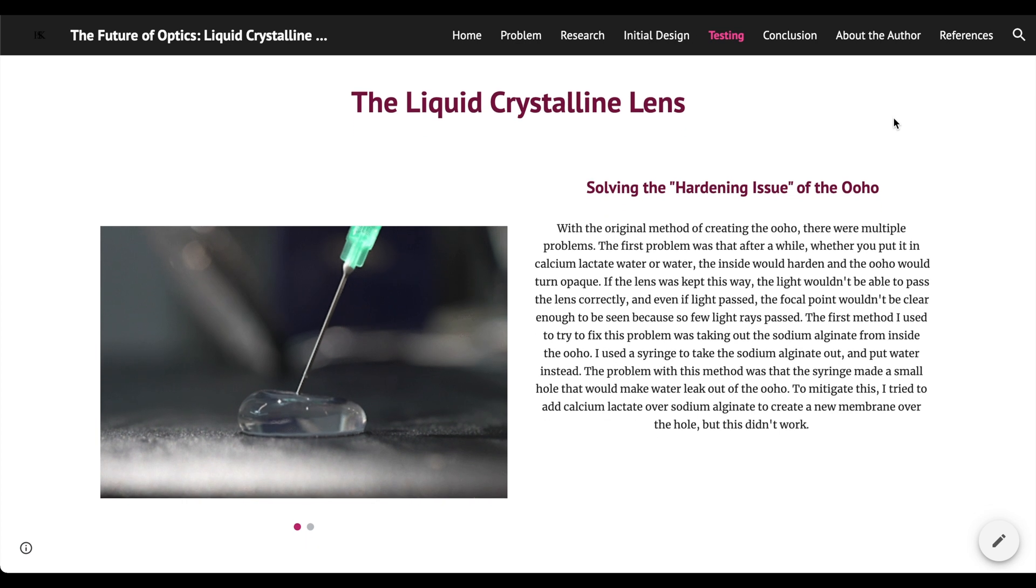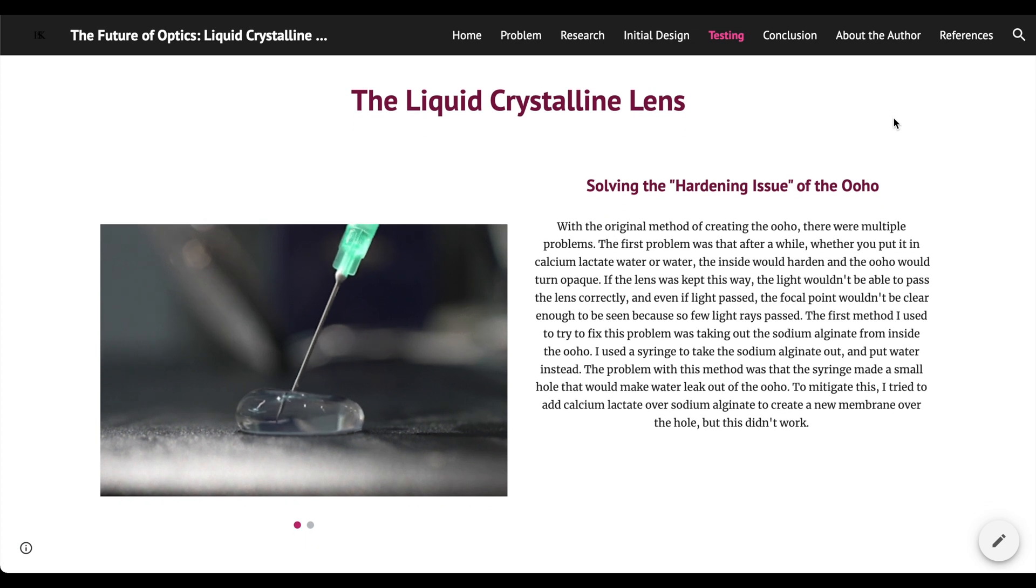Moving on to the next section, testing. The first thing I needed to fix from the initial design after some testing was trying to solve the hardening issue of the OHO. The problem with this lens was that after a while, whether you put it in calcium lactate solution or just water, the inside would harden and the OHO would turn opaque. If the lens was kept this way, the light wouldn't be able to pass the lens correctly, and even if light passed, the focal point wouldn't be strong enough to be seen because so few light rays passed.